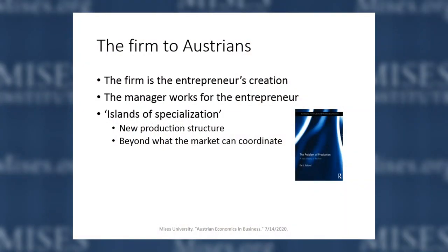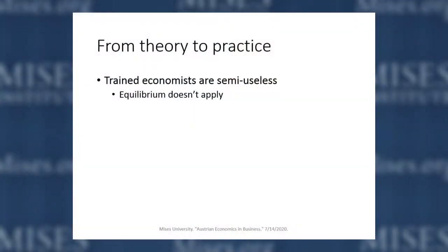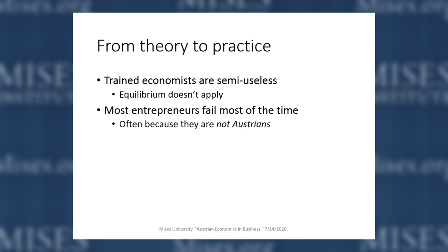So you're doing something beyond what the market can coordinate. I elaborate on this in one of my two books, available downstairs and in the online store — the price is actually a whole lot lower in the Mises store than anywhere else. So let's move from theory to practice. In terms of the theories out there, economists are — I'm being nice calling them semi-useless — mainstream economics is really not useful at all. Even managerial economics is pretty useless, because equilibrium simply does not apply. And most entrepreneurs fail most of the time. There are not a whole lot of businesses that survive many years. My explanation is that it's because they're not Austrians — and I'm not kidding.